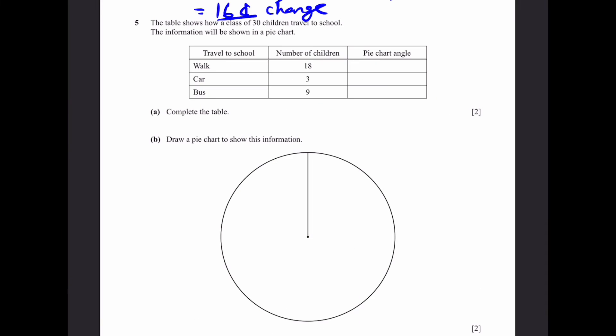Let's go to question 5. The table shows how a class of 30 children travel to school. The information will be shown in a pie chart. Part A: Complete the table. We know that there's 30 children so the angle is going to be, for walk, 18 by 30 times 360 degrees since one circle has 360 degree angle. If you do that you get 216 degrees. For car it's 3 by 30 times 360 degrees which is 36 degrees. For bus it's 9 by 30 times 360 which is 108 degrees.